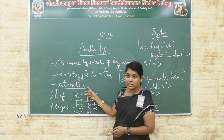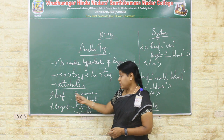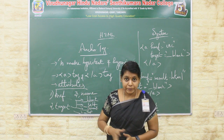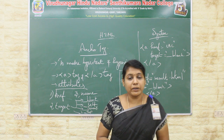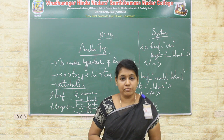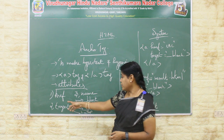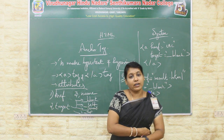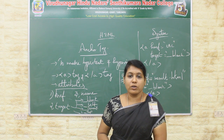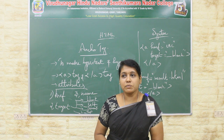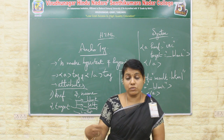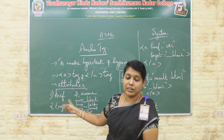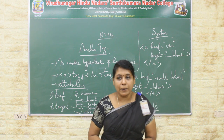Now we are seeing attributes of anchor tags. We have many attributes. The main attribute of the anchor tag is href. The href is nothing but it is hyper reference. In this href attribute, we have to specify the URL of the web page. When you click the hypertext, whichever web page you want to open, that web page's URL you have to specify in the href attribute.